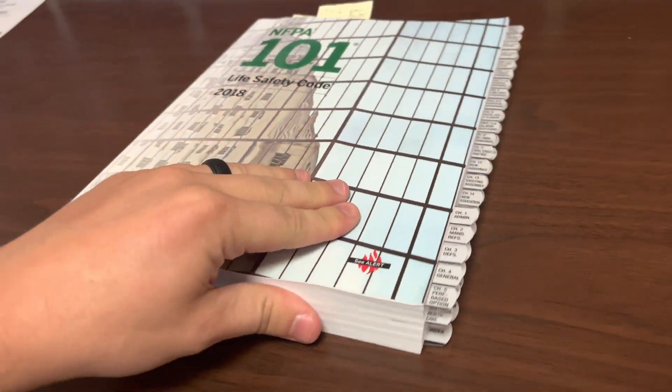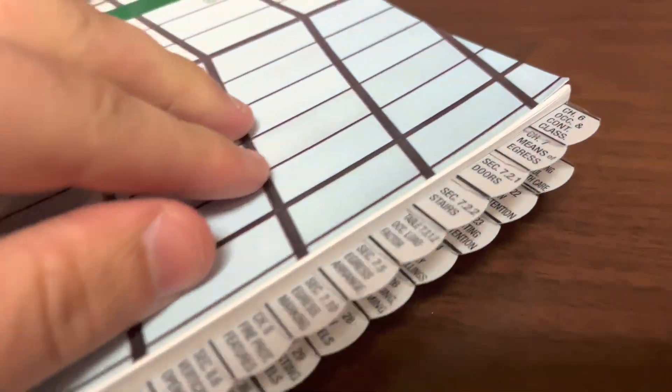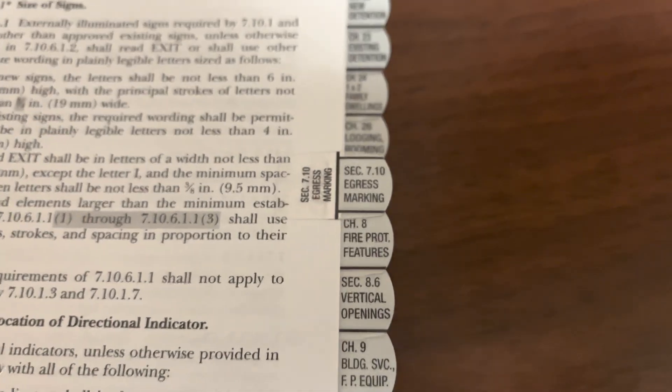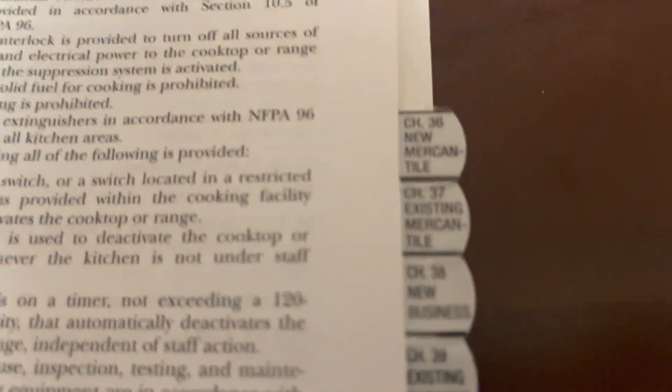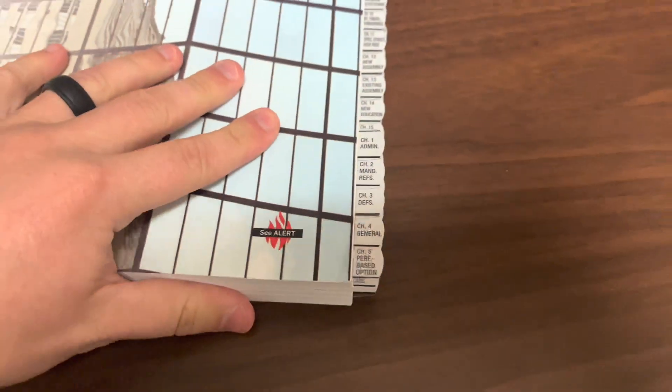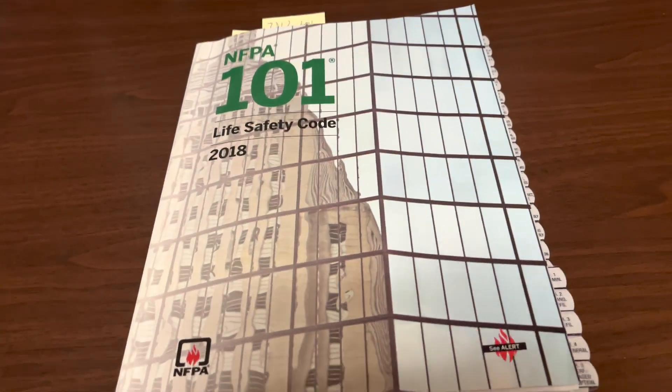Once you get all the way to the top, when you put your tabs all the way to the top, you're gonna want to start at the bottom again and just repeat — as you can see here, this is what the tabs look like. They're neat, they look good. Hope this video helped you guys out — please hit that like button and subscribe.